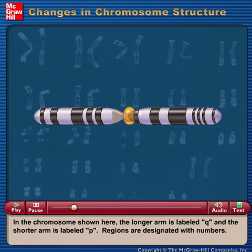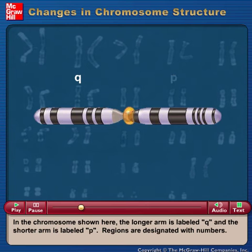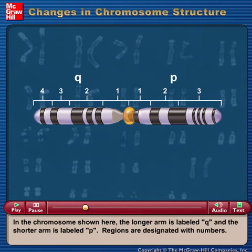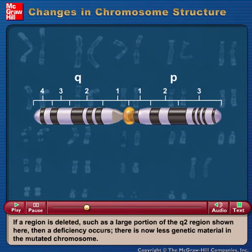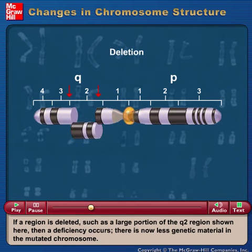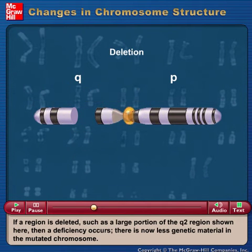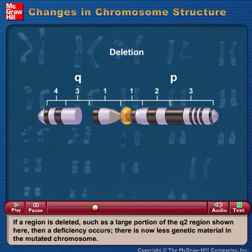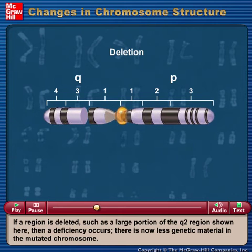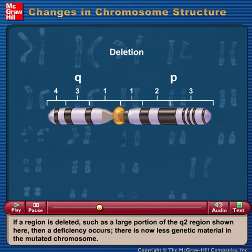In the chromosome shown here, the longer arm is labeled Q and the shorter arm is labeled P. Regions are designated with numbers. If a region is deleted, such as a large portion of the Q2 region shown here, then a deficiency occurs. There is now less genetic material in the mutated chromosome.